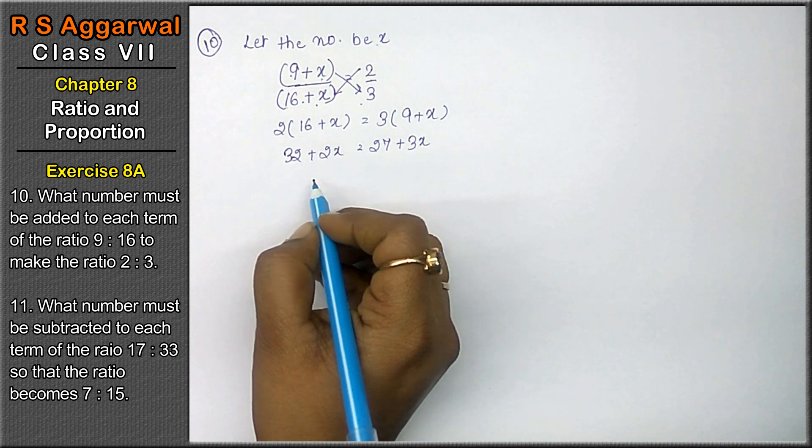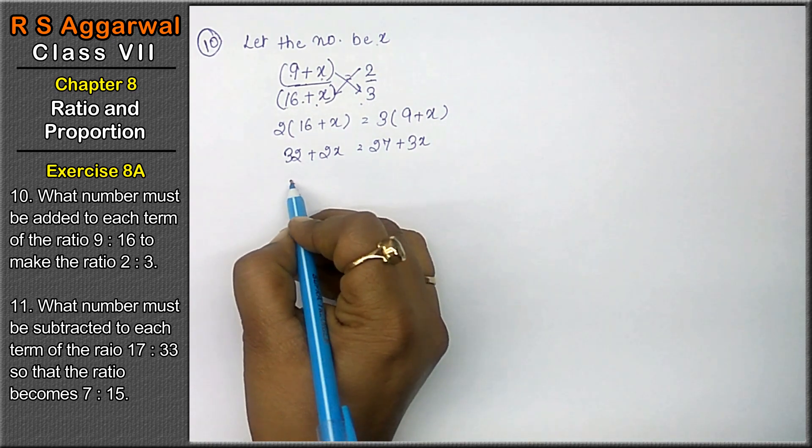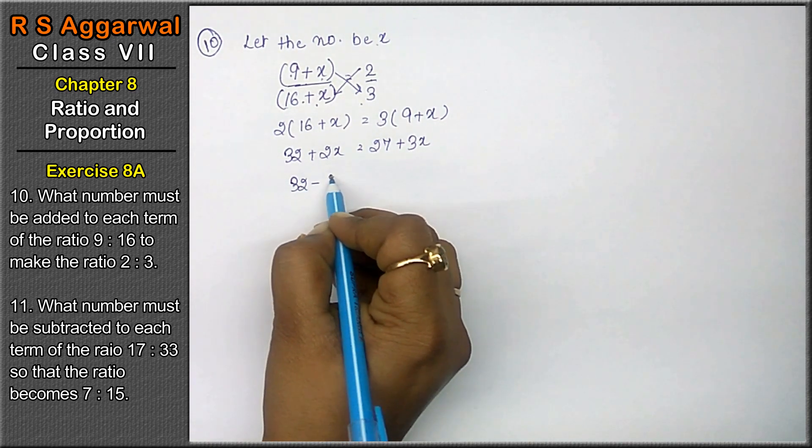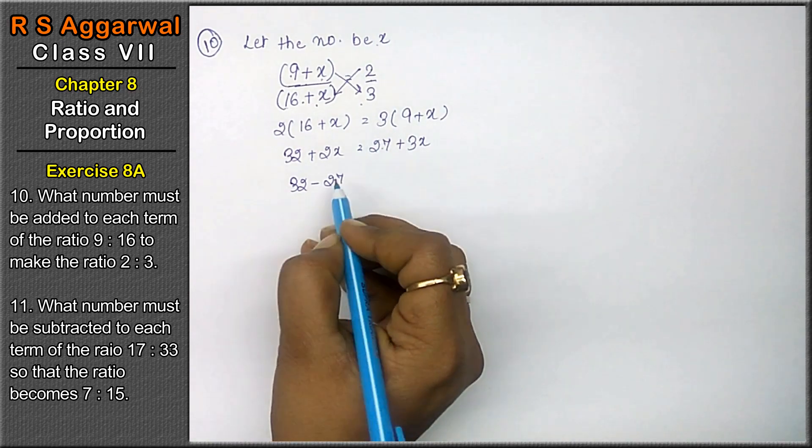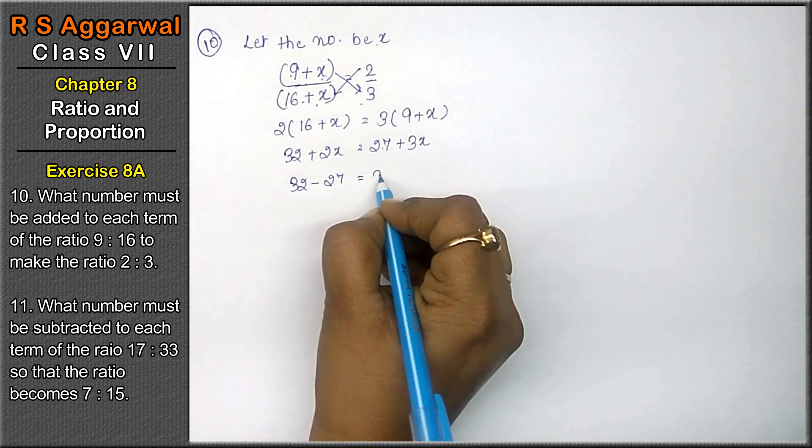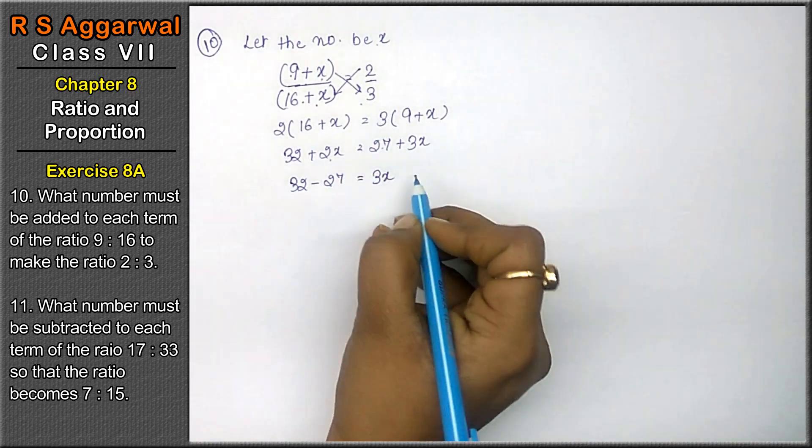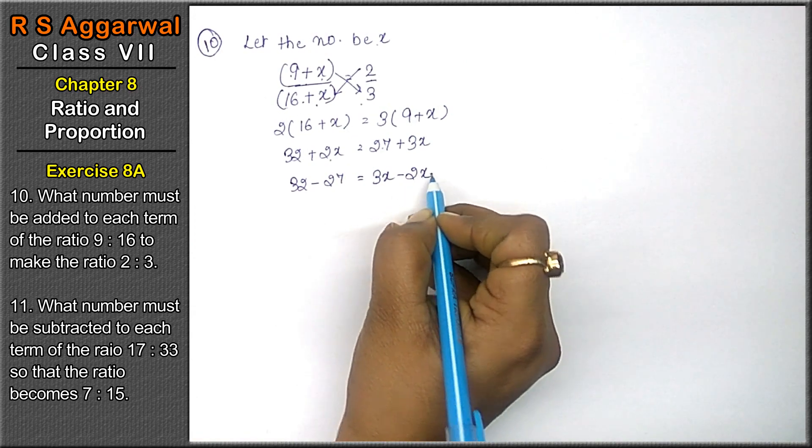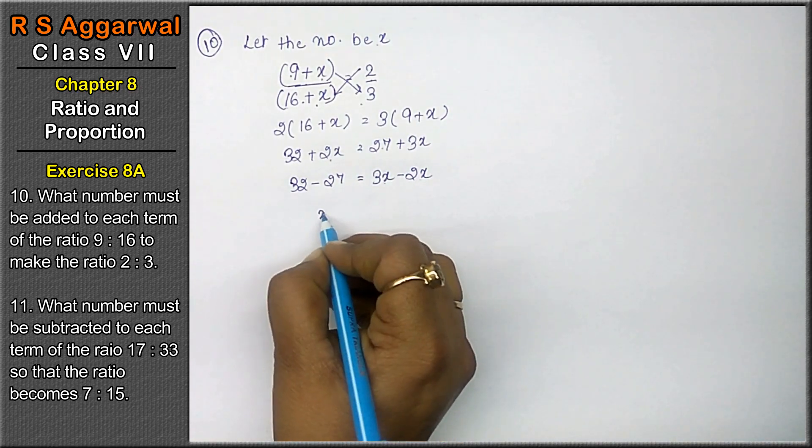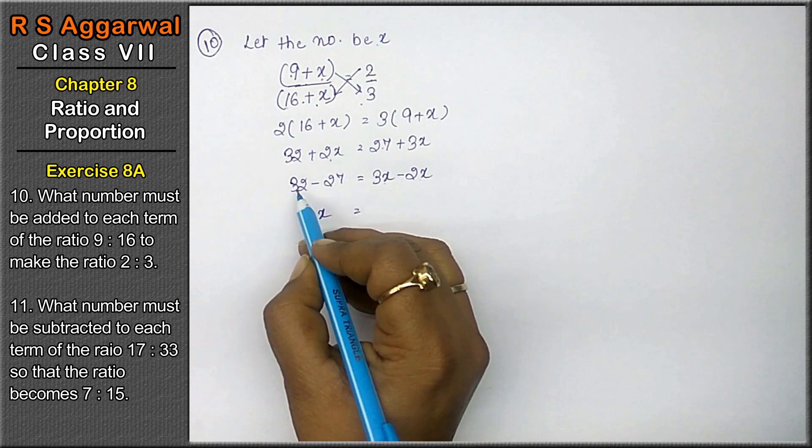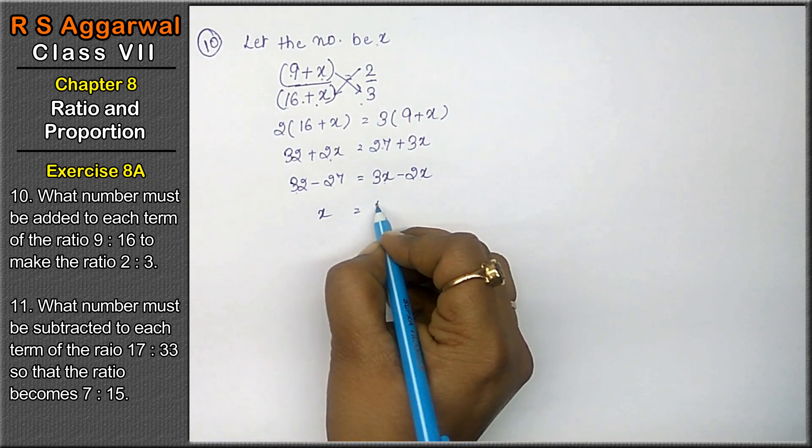X terms on one side, non-x terms on one side. This becomes 32 as it is minus 27. This was plus, coming here it becomes minus. 3x as it is. This was plus, coming here it becomes minus. So 3x minus 2x is x equals to 32 minus 27 is 5.